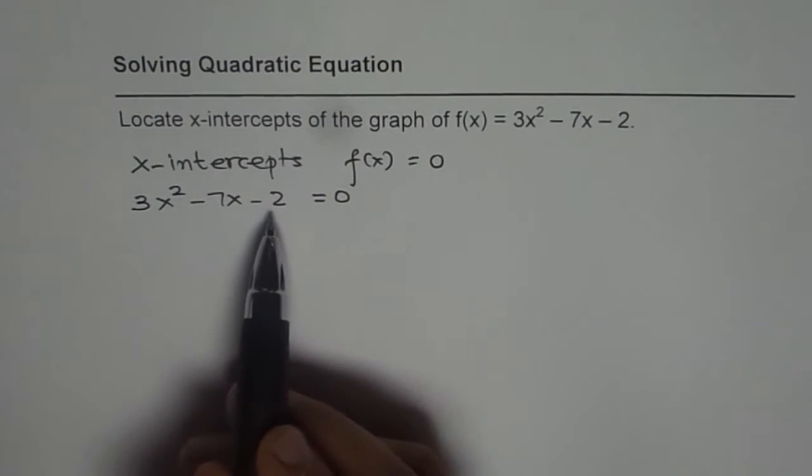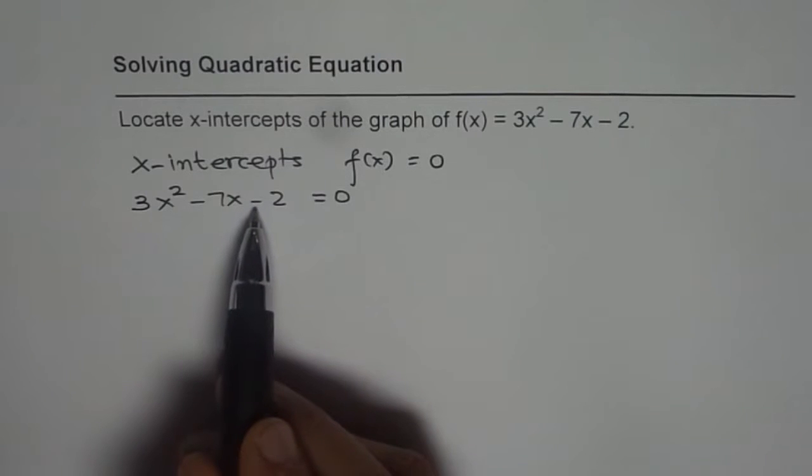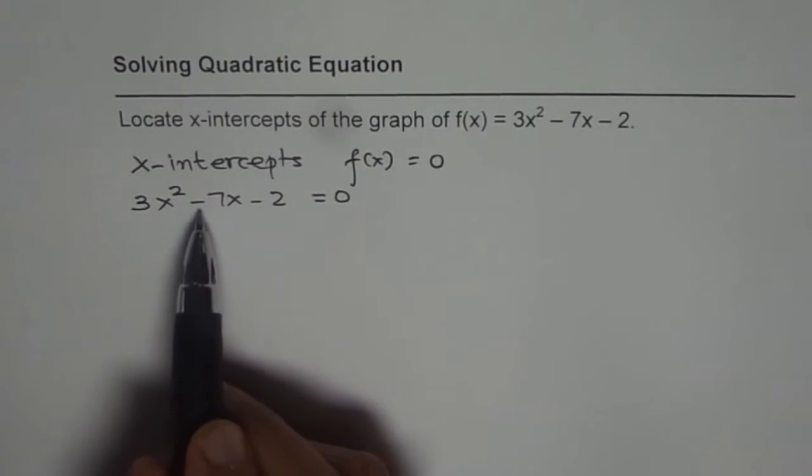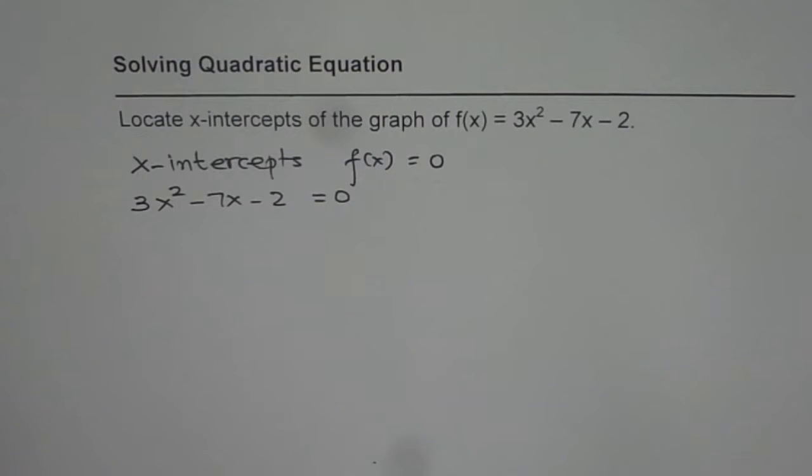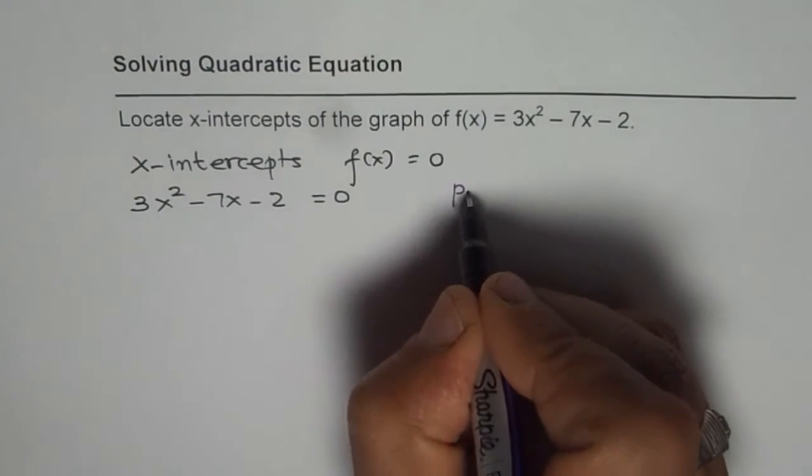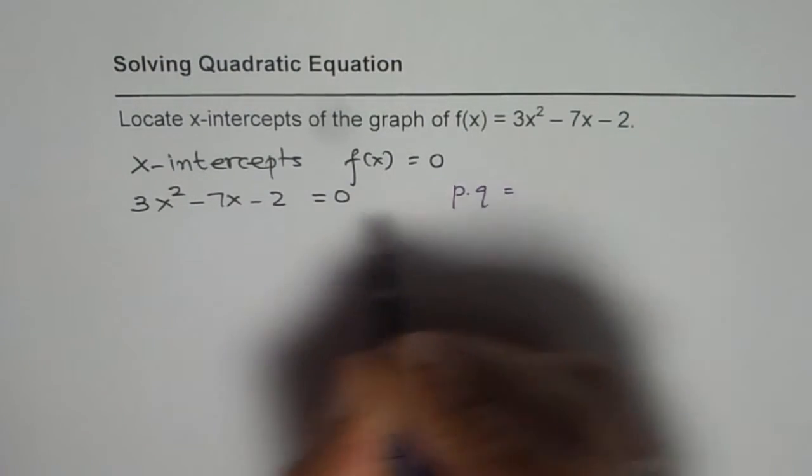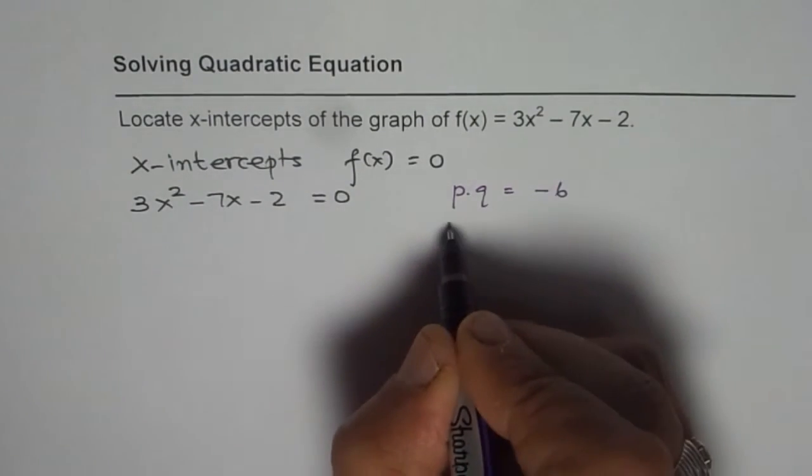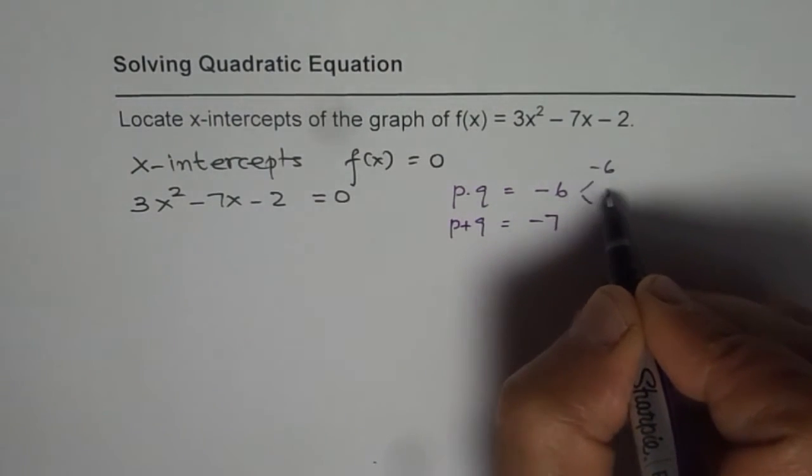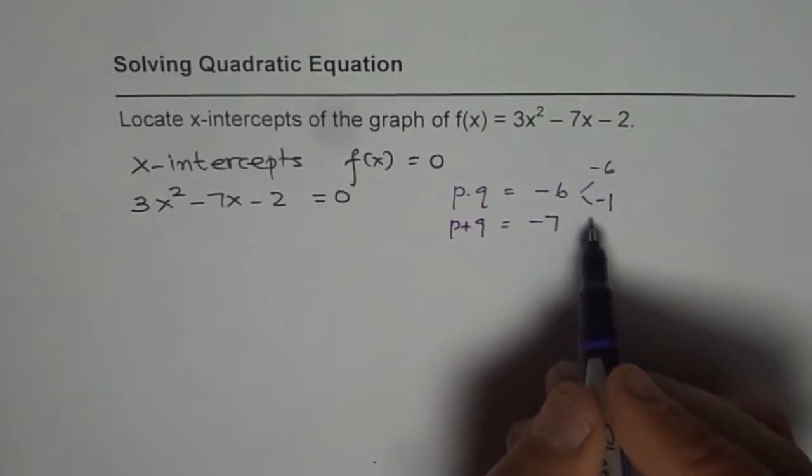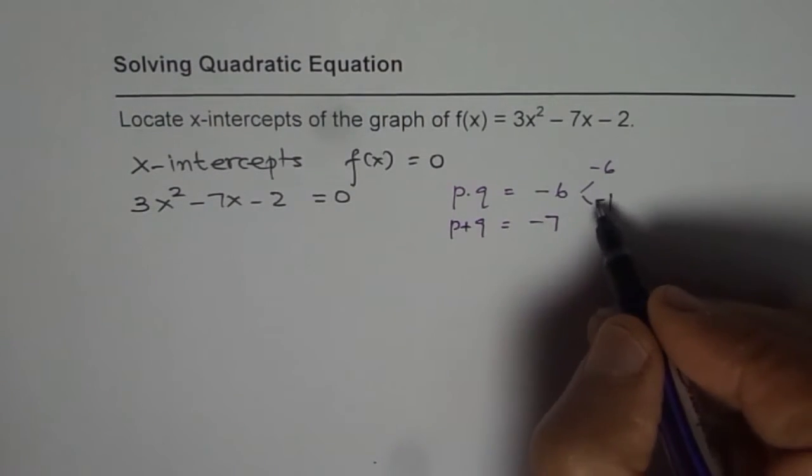For solving such equations, you could do factoring. 3 times 2 is minus 2 here, minus 6, and you need minus 7. We can do product and sum and solve it using factoring. We are looking for two numbers whose product is minus 6 and whose sum equals minus 7. The numbers are minus 6 and minus 1, but that gives us that as positive. So 3 and 2 will not give.